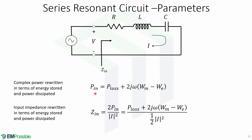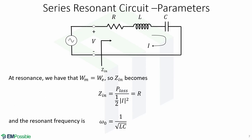We can rewrite the complex power delivered in terms of the energy stored and power dissipated, equal to P_loss plus 2j*omega times (W_m minus W_e), where W_m is the energy stored in the inductor and W_e the energy stored in the capacitor. This lets us write the input impedance in terms of stored energy and power dissipated. At the resonant frequency, W_m equals W_e, so the input impedance becomes R, and the resonant frequency omega_0 is given by 1 over the square root of L times C.